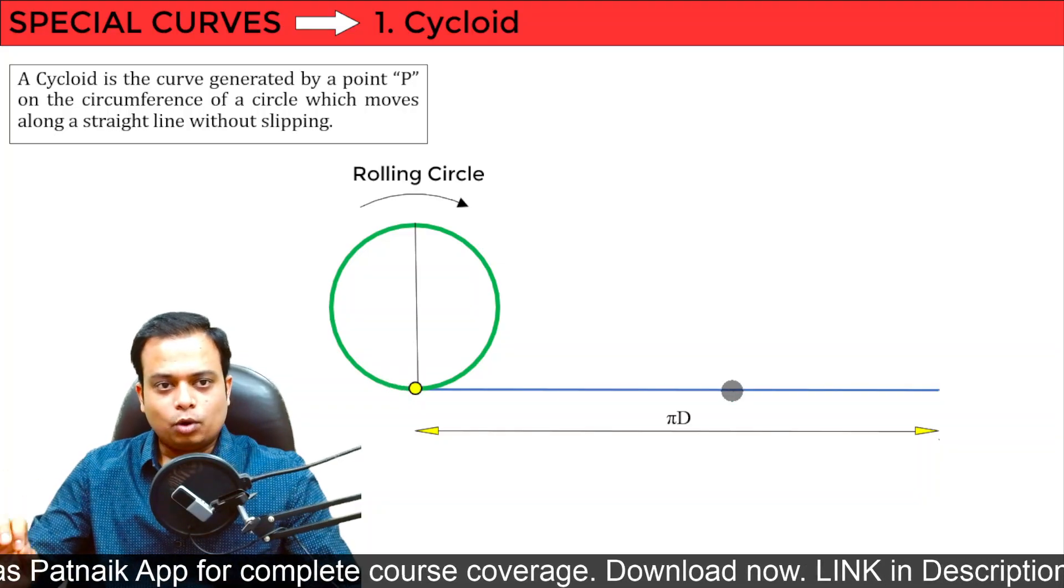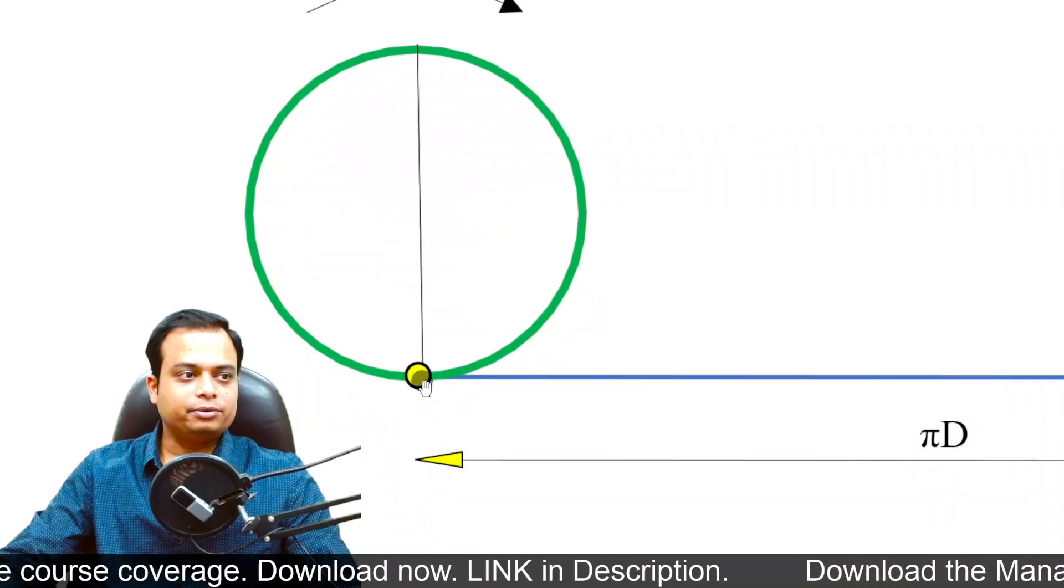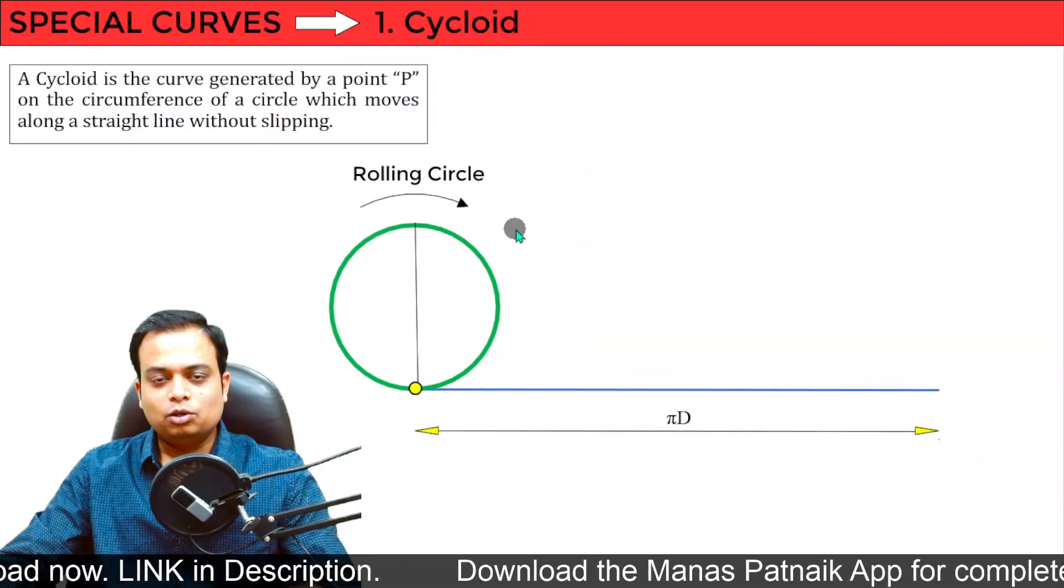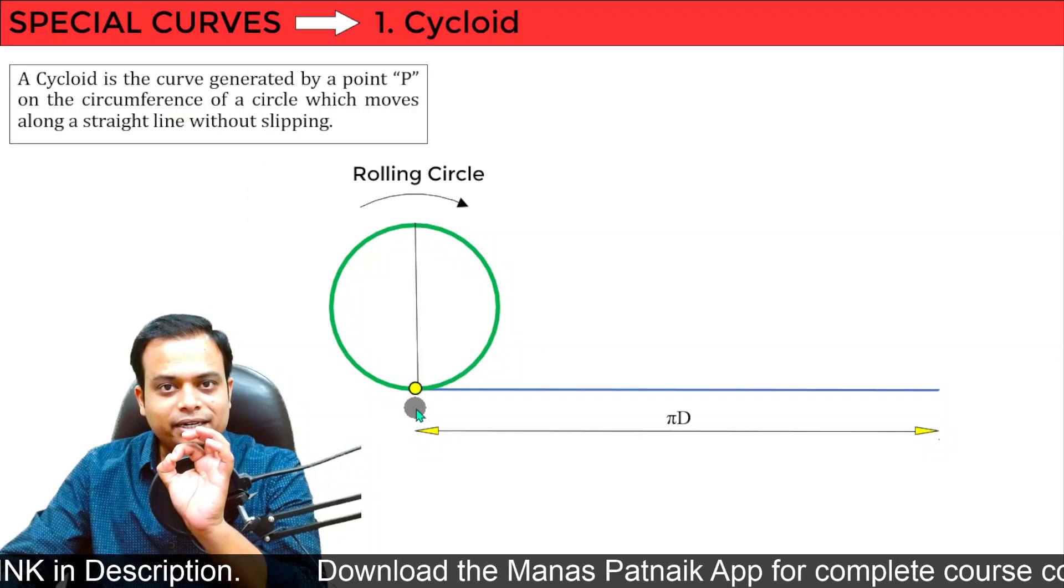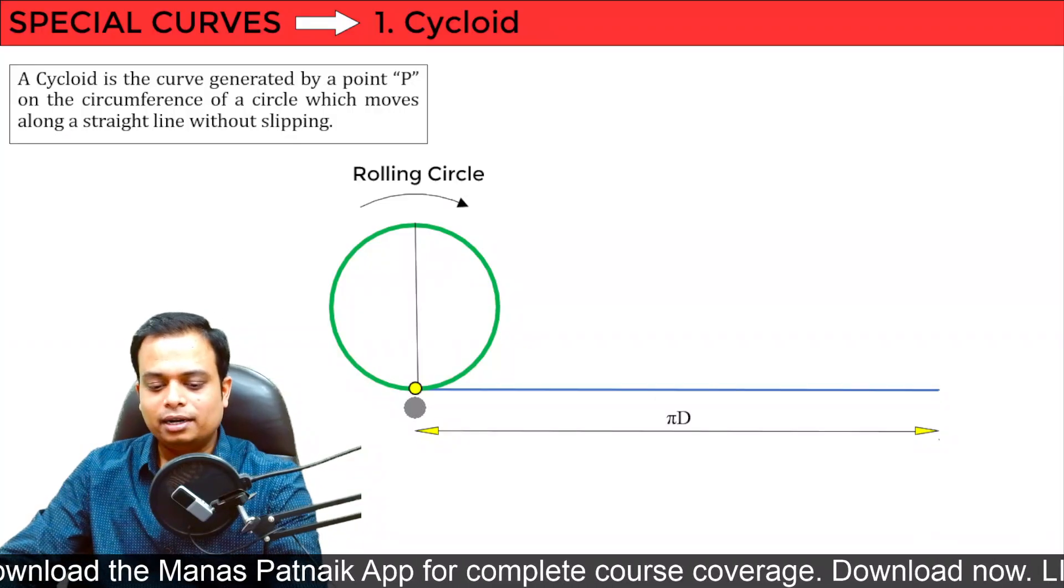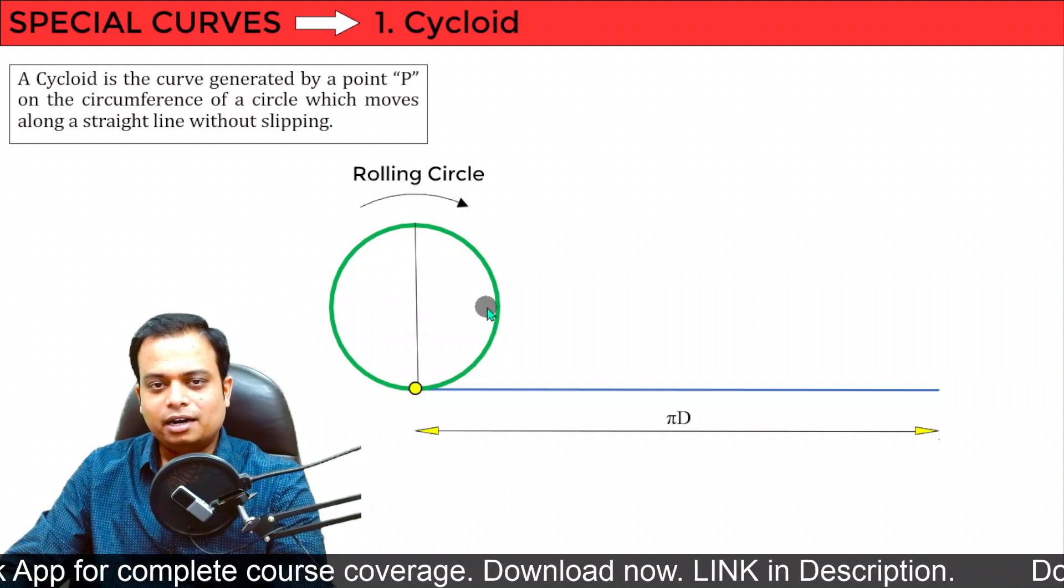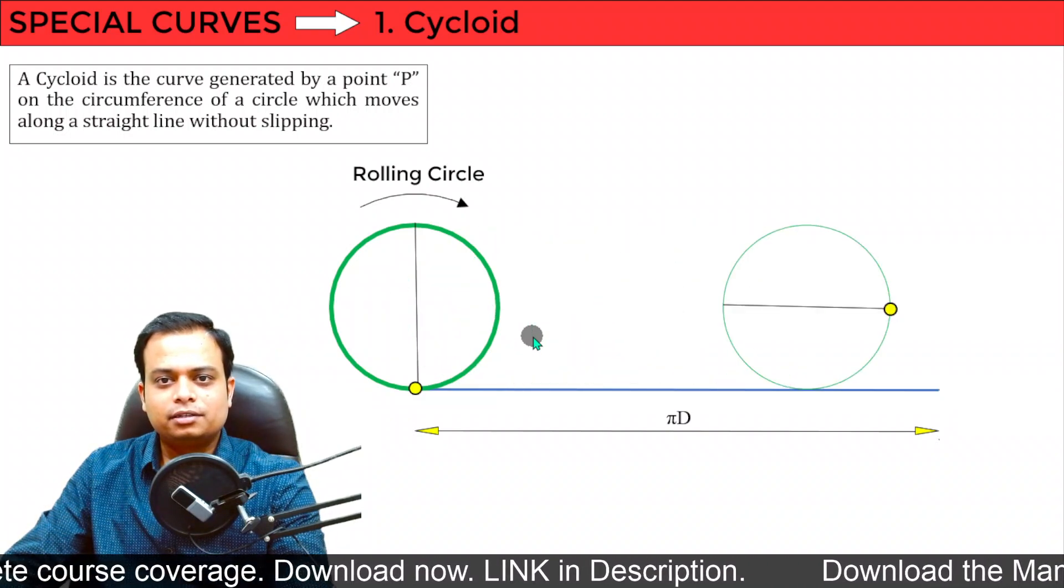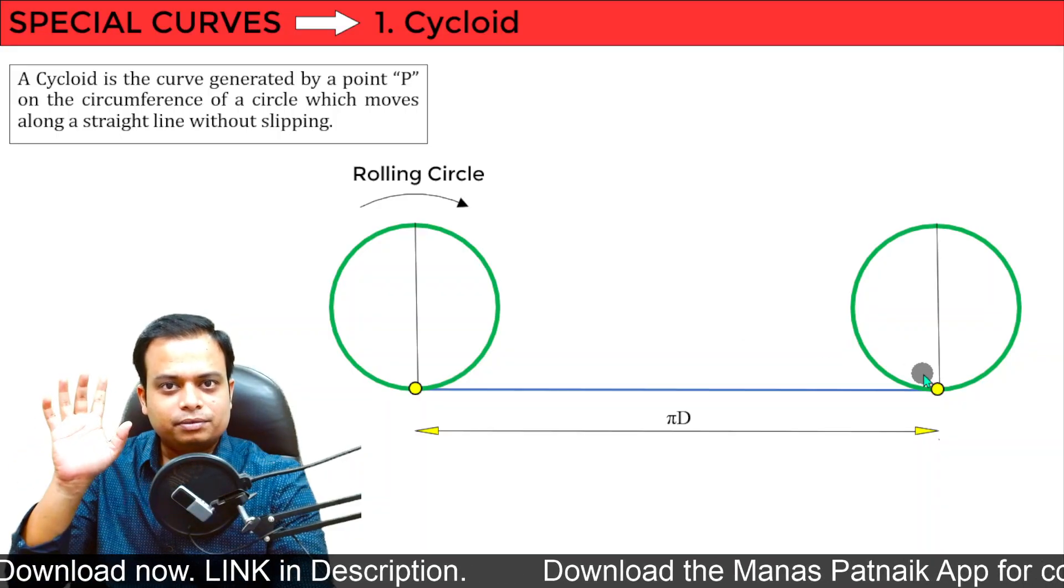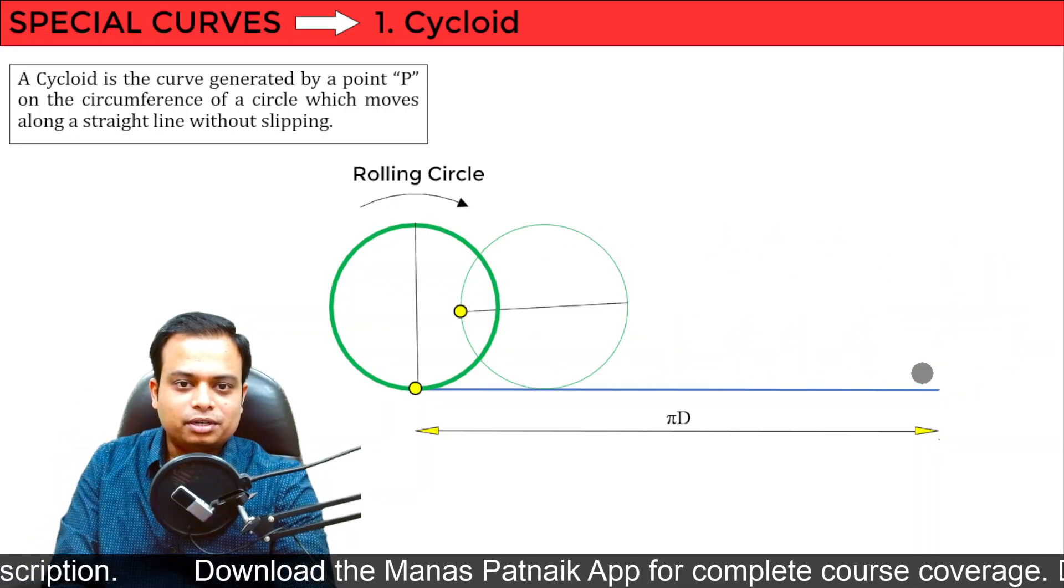Watch this carefully. What we are going to do is, we are going to place a point here, this yellow color point that you see. We are going to place a point on the circumference. And then as the circle starts rolling, we are going to keep a track of this point. Let's say we simply push this circle, it will start rolling like this. And here, it has completed one revolution. Let us get this rolling circle back to its initial position.